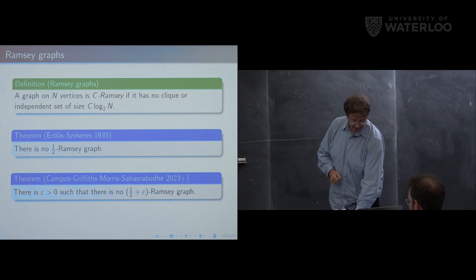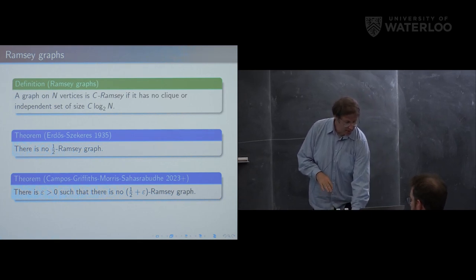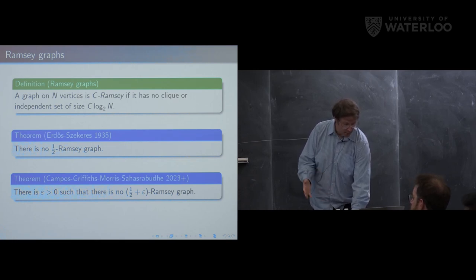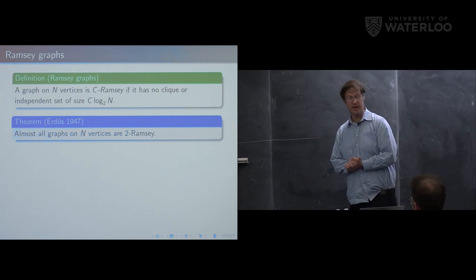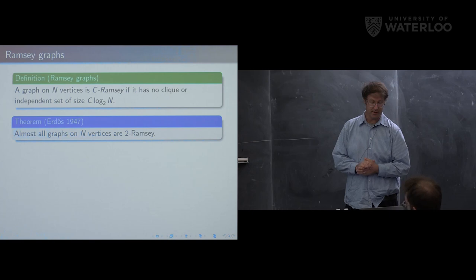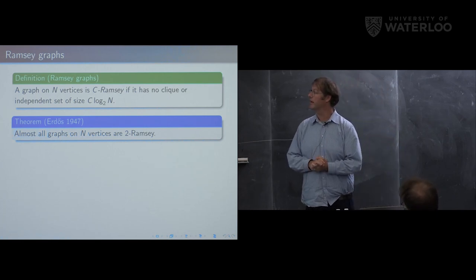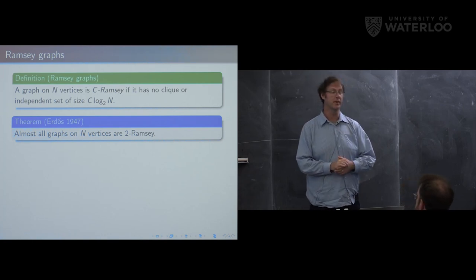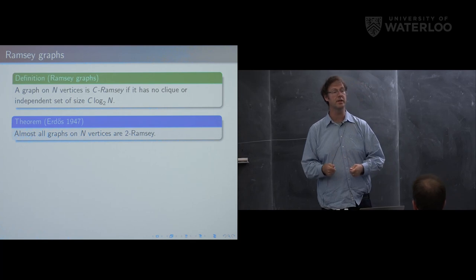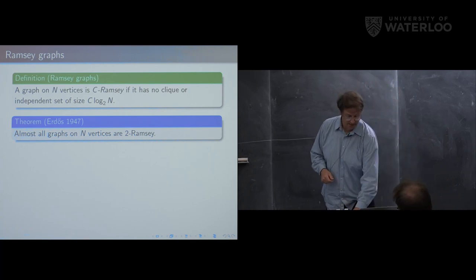In the other direction, if we multiply the clique/independent set size threshold by four, almost all graphs don't have such a large clique or independent set. There's a very influential application of the probabilistic method due to Paul Erdős showing that almost all graphs on N vertices are 2-Ramsey — meaning the largest clique or independent set has size less than 2·log₂(N).